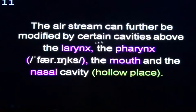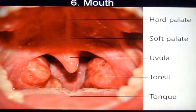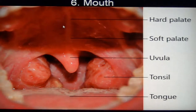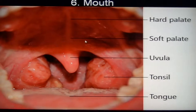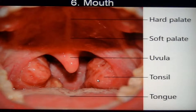The air stream can further be modified by certain cavities above the larynx: the pharynx, the mouth, and the nasal cavity. Let me show you the mouth — this is the roof of the mouth, and this is the hard palate. The soft palate is just above the uvula. This is the uvula, and this is the soft palate — very soft. These are the tonsils, which do not play any part. And this is the tongue, a very vital organ for producing several sounds, including vowel sounds.